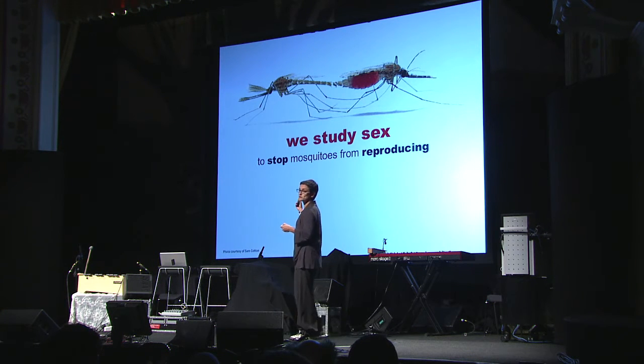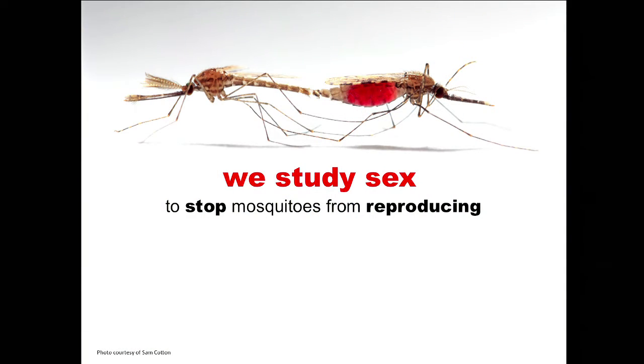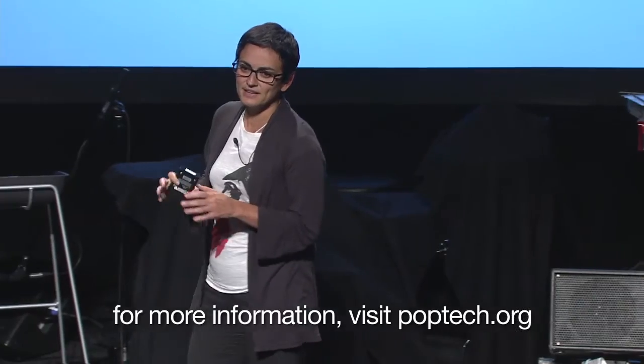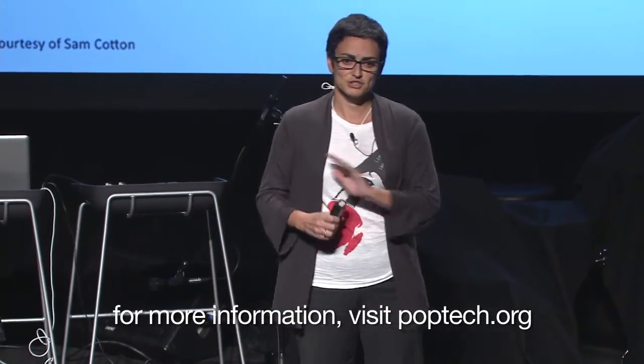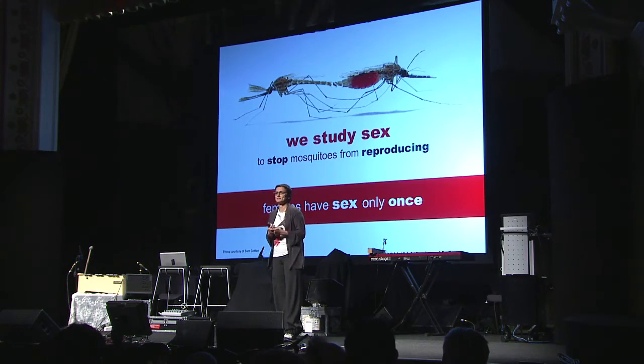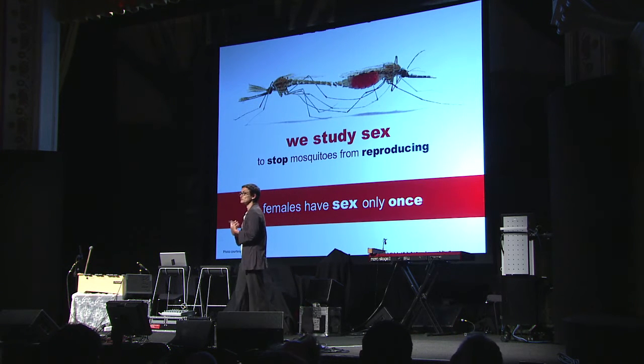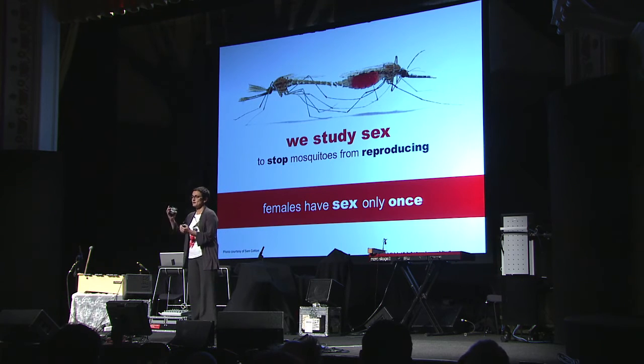Here you see a mosquito couple having sex. It looks pretty hot, doesn't it? It might not look like a very passionate affair — the male and the female are not even looking at each other. However, it's actually a very effective process. In fact, sex is over in 20 seconds. And during these 20 seconds, the female gets everything she needs from the male: she gets sperm, she gets seminal secretions, and then that's it for her. She doesn't want to have sex anymore. She switches off for the rest of her life, which means females have sex a single time.